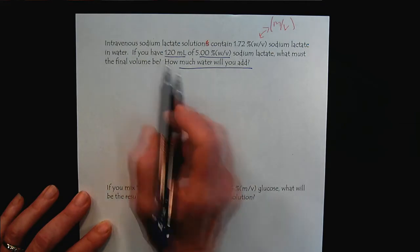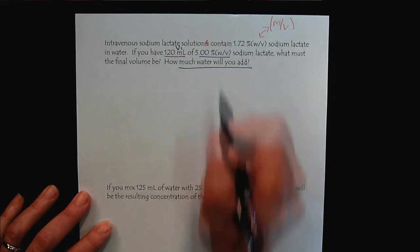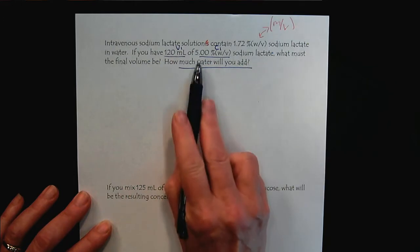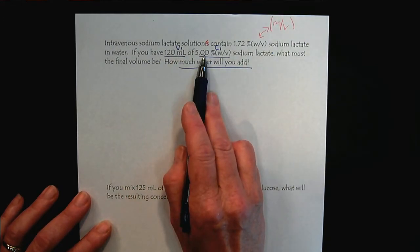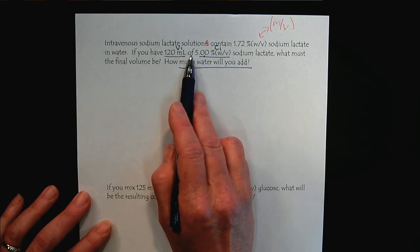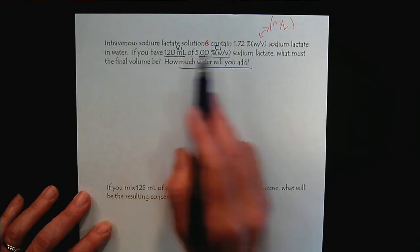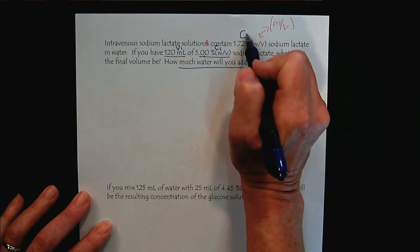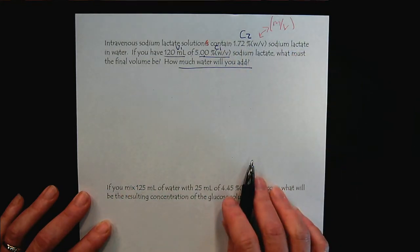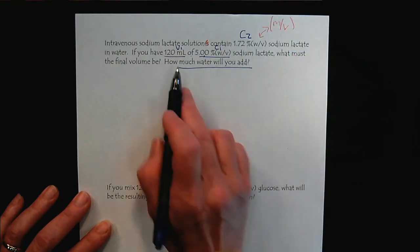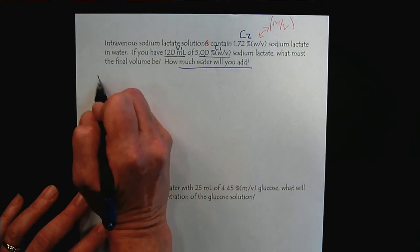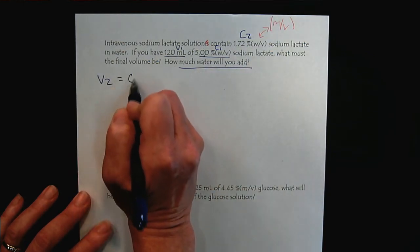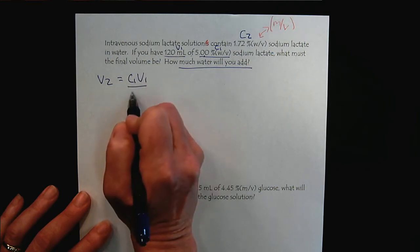There's our volume, our initial volume and our initial concentration. We recognize those as the V1 and the C1. We have the higher concentration and they're linked by the word of. This is the concentration that we want to make. How much of our materials do we have? How much can we make? We're back to V2 again.